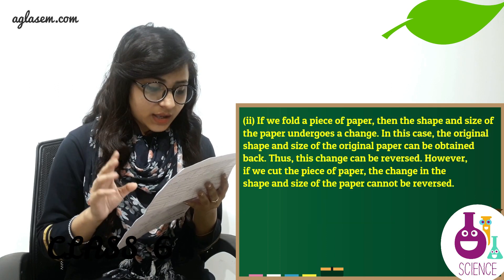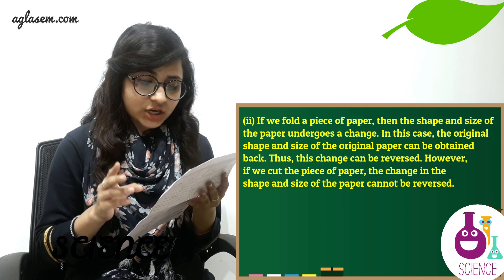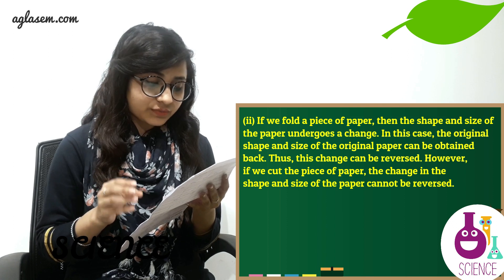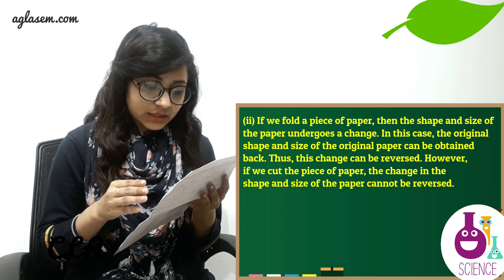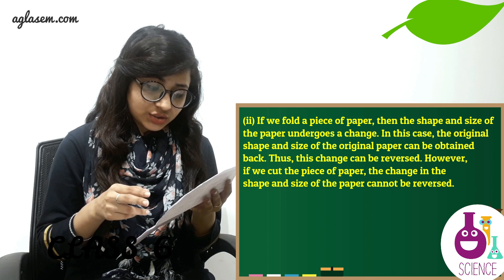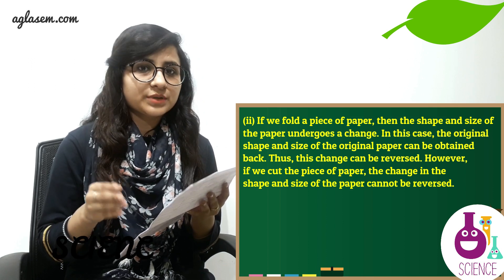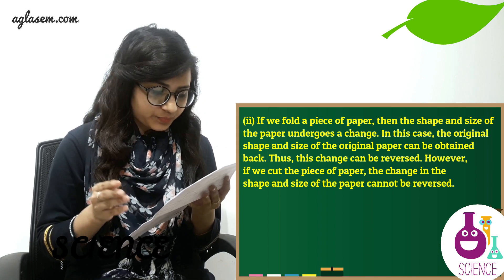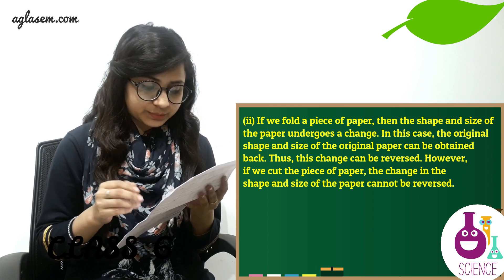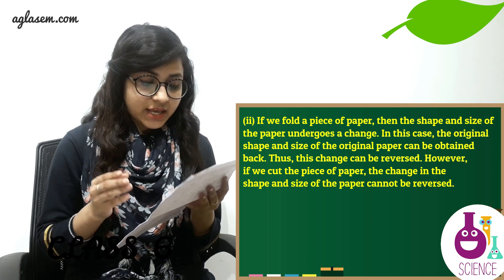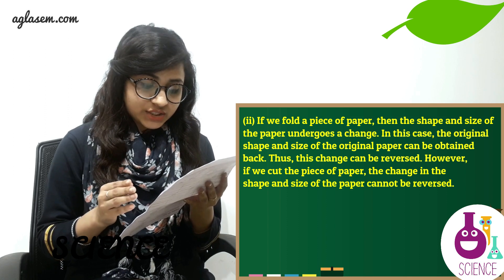Second example: if we fold a piece of paper, the shape and size of the paper undergo a change, but the original shape and size can be obtained back by unfolding it — so this change can be reversed. However, if we cut the piece of paper, the change in shape and size cannot be reversed.